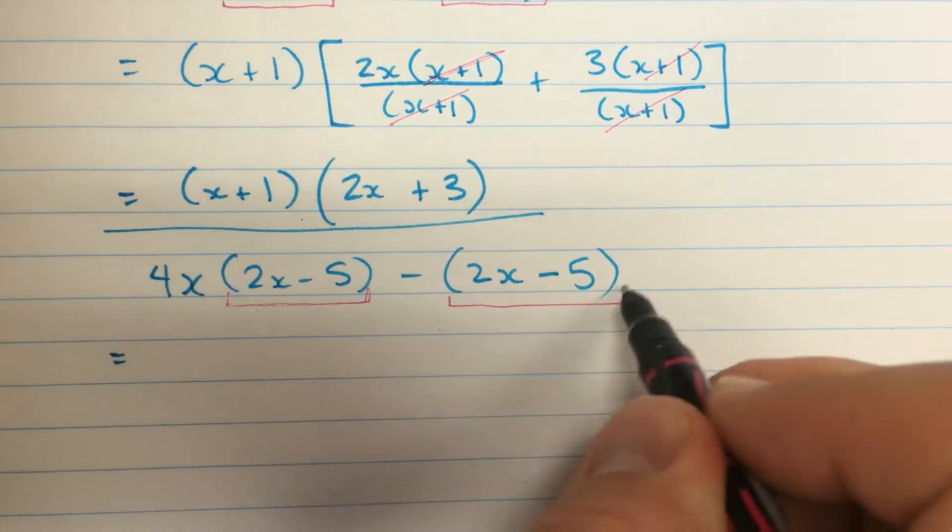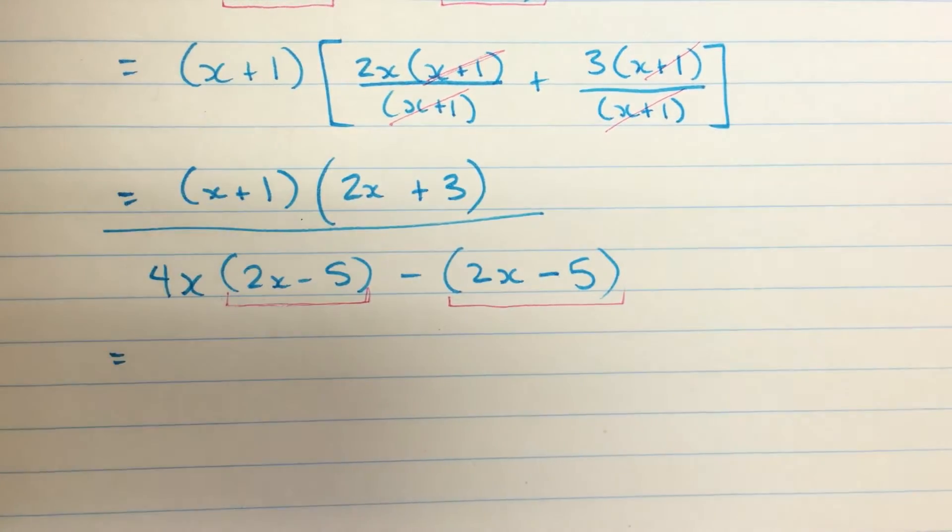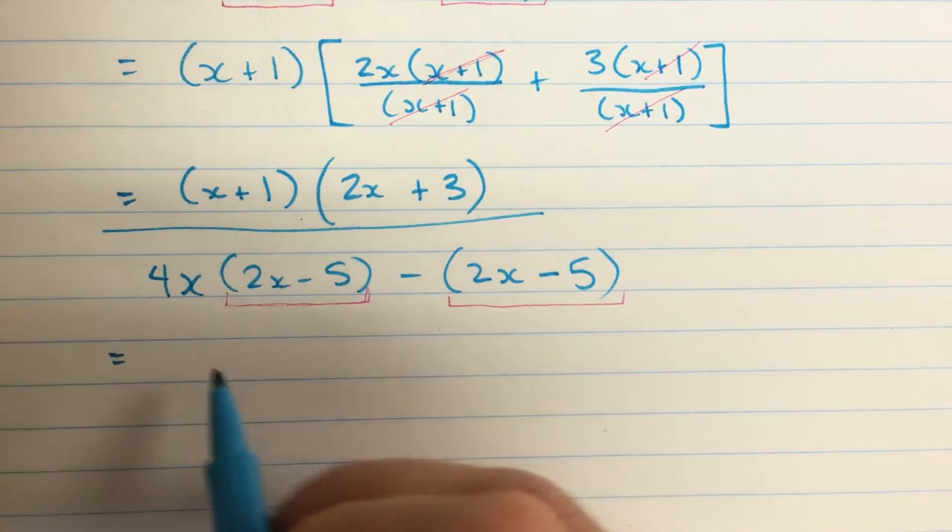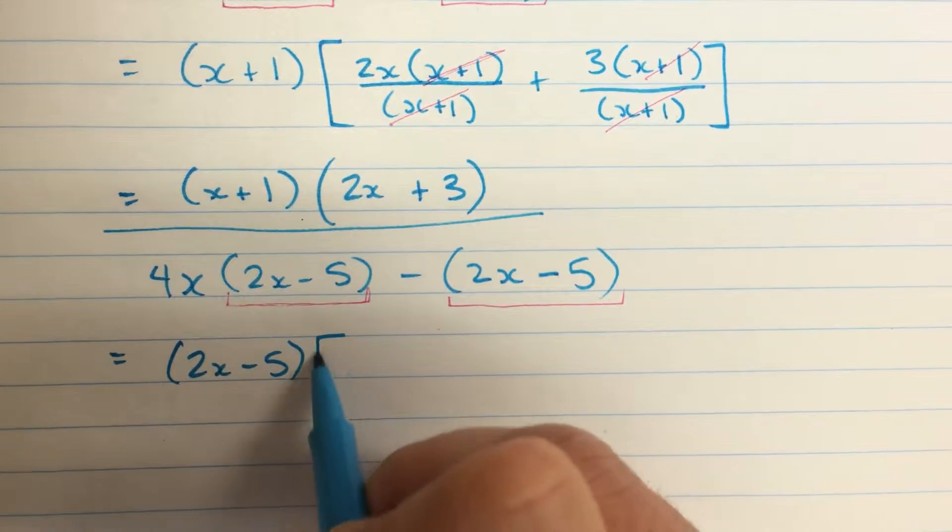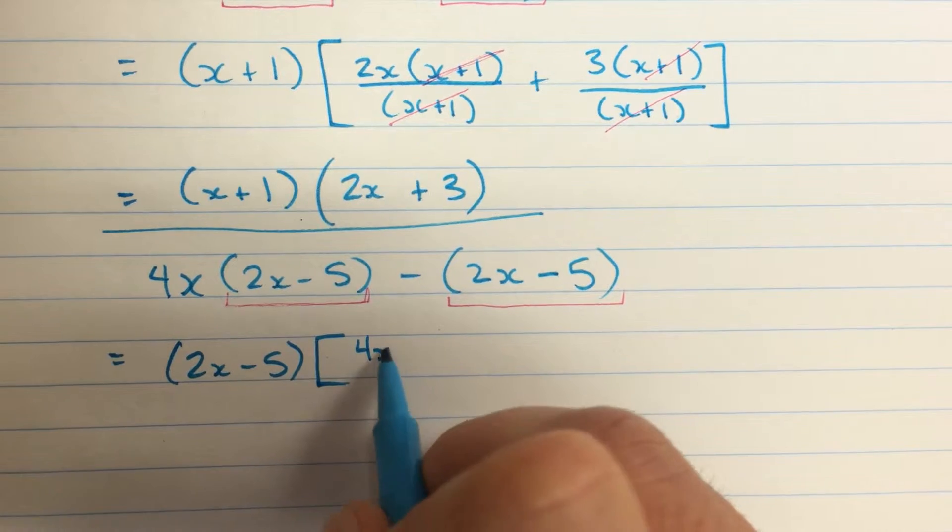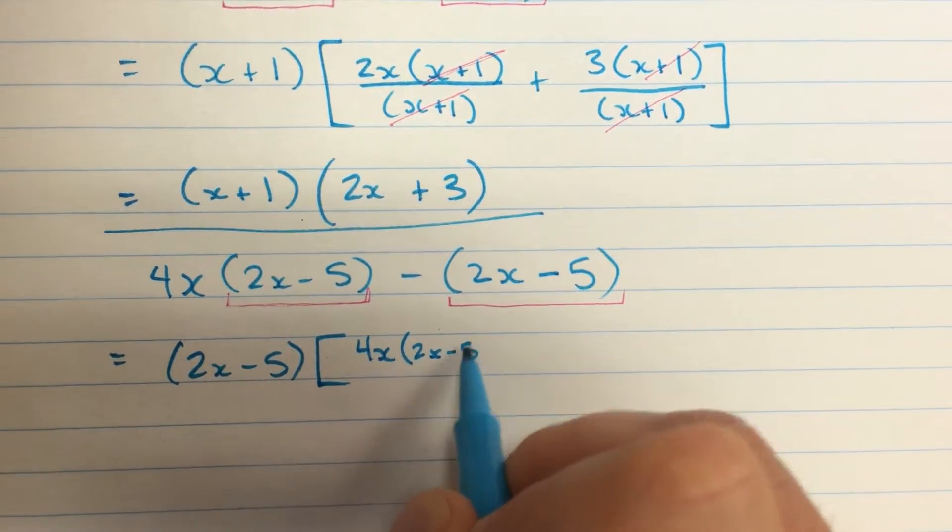One there and one there. So there's an expression that we can factor out of each sort of super term here. And so we will do that. Let's factor that out. Inside here we are left with, well we have 4x times 2x minus 5.